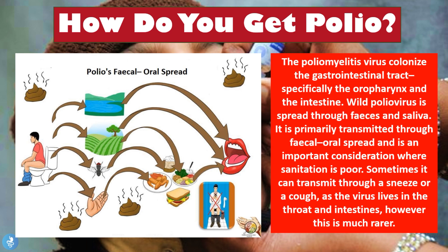The poliovirus spreads through fecal-oral transmission. Because the virus infiltrates the GI tract, it is found in feces, which can contaminate clean water sources ingested by others. These feces can also contaminate crops, fruits, and vegetables that are then ingested without being washed properly. Additionally, a person can contract the virus by forgetting to wash their hands after using the bathroom and then touching or preparing food. All of these routes are forms of fecal-oral spread.